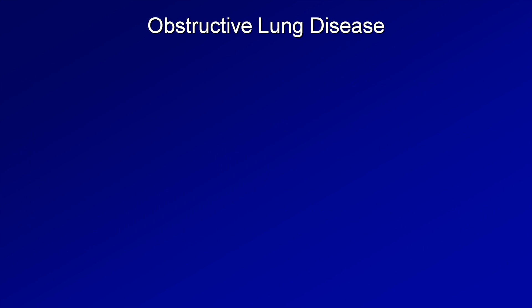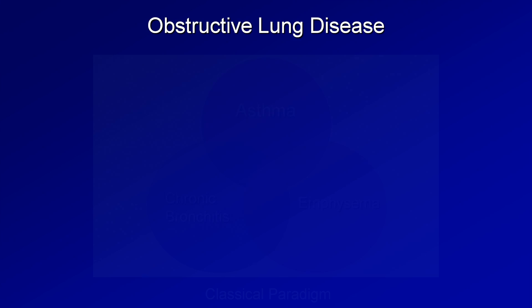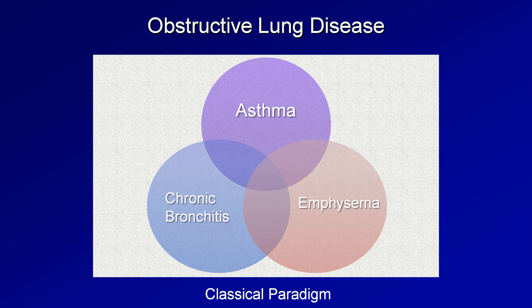Asthma and COPD are both considered members of a category of chronic lung conditions called obstructive lung disease, named such because the single most important pathophysiologic feature in both is airway obstruction. There is a classical paradigm of obstructive lung disease which has historically been represented by a Venn diagram. Emphysema and chronic bronchitis are sometimes considered to be at two ends of the COPD spectrum, or more accurately, two overlapping sets of manifestations within COPD.